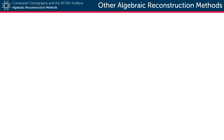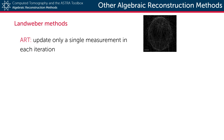In this video we'll present a few other popular algebraic reconstruction methods. In SIRT, each iteration contains the forward and back projection along each detector value. In contrast to this, each iteration of the algebraic reconstruction technique, also called ART, only uses a single detector value to update the reconstruction.